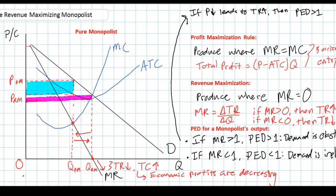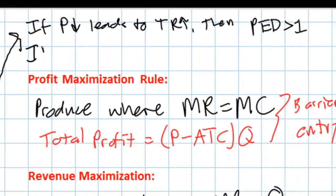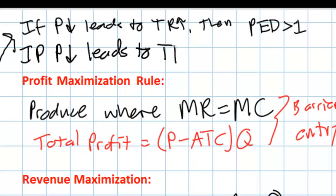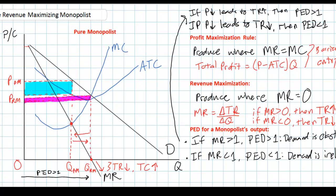If a firm lowers its price between 0 and QRM, demand is elastic because consumers are relatively responsive to the lower prices. As the price falls, consumers increase the quantity they consume by a percentage greater than the decrease in price — otherwise total revenues would not be rising. The total revenue test also tells us that if a decrease in price leads to a decrease in total revenue, then PED is less than 1. A given percentage decrease in price led to a smaller percentage increase in quantity demanded, so the firm's total revenue falls. Beyond QRM, demand is inelastic.